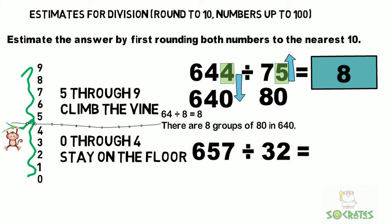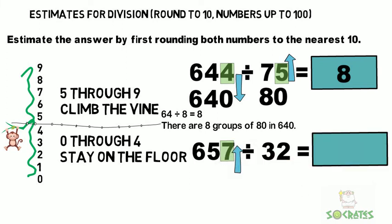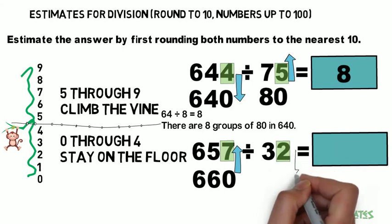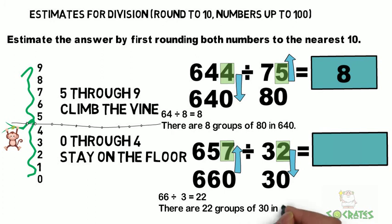657 divided by 32. With the 7, we're going to go up to the next 10, which is 660. We're going to divide that by—with the 2, we're going to go back down to 30. So 660 divided by 30. How many times can you put 30 into 660? You can put it in 22 times.